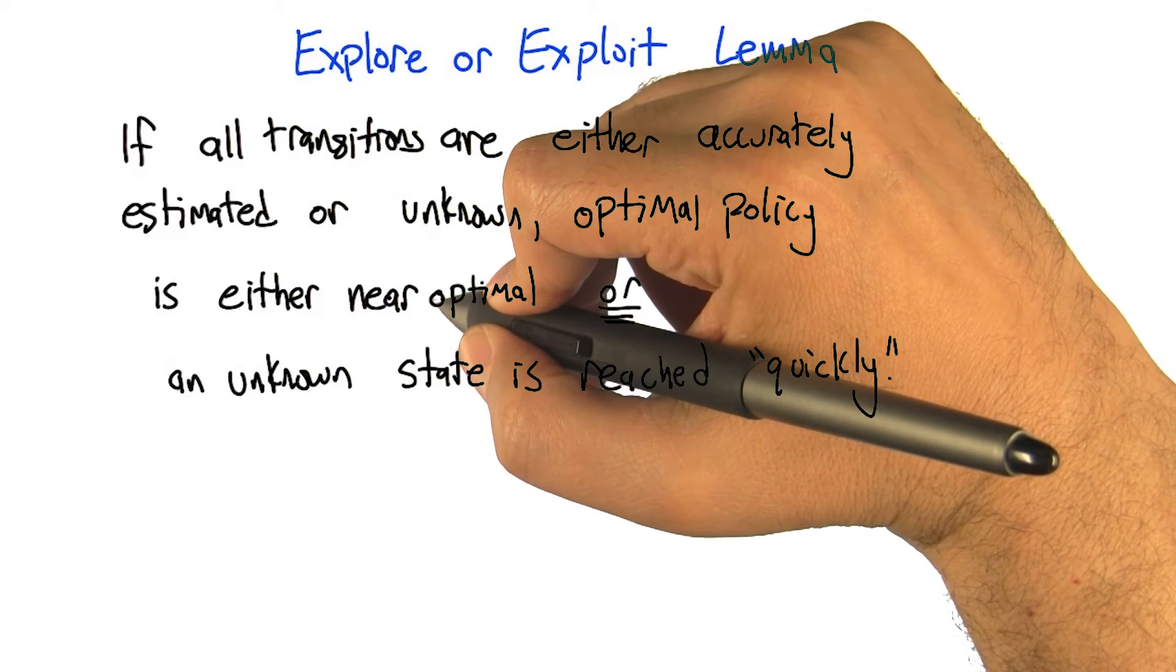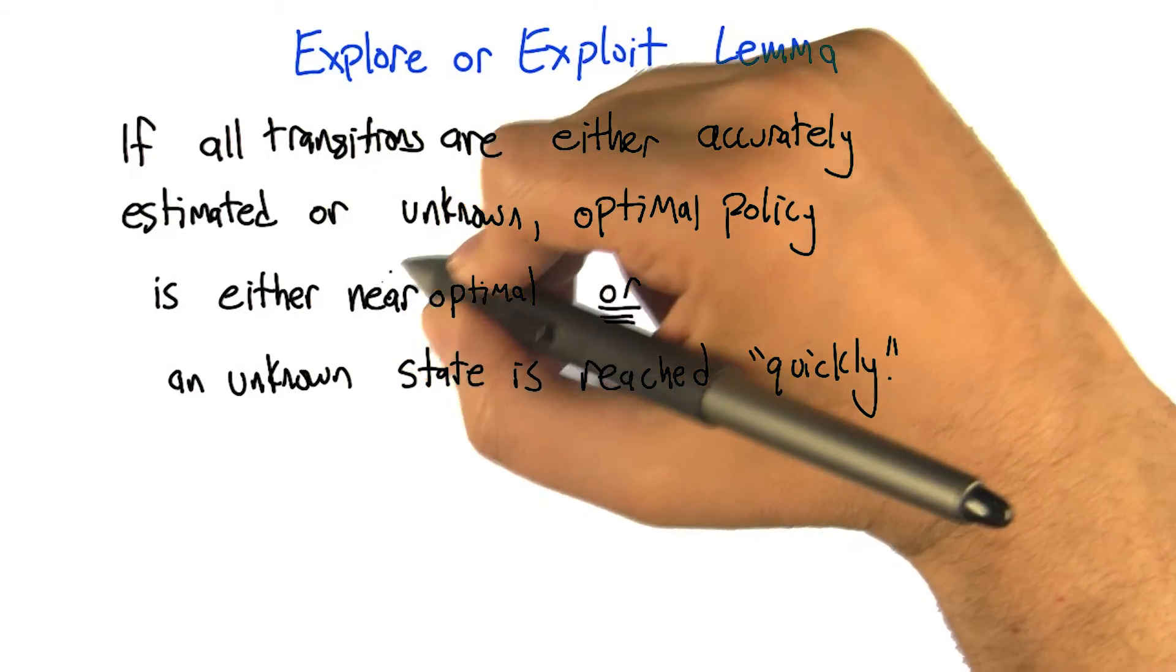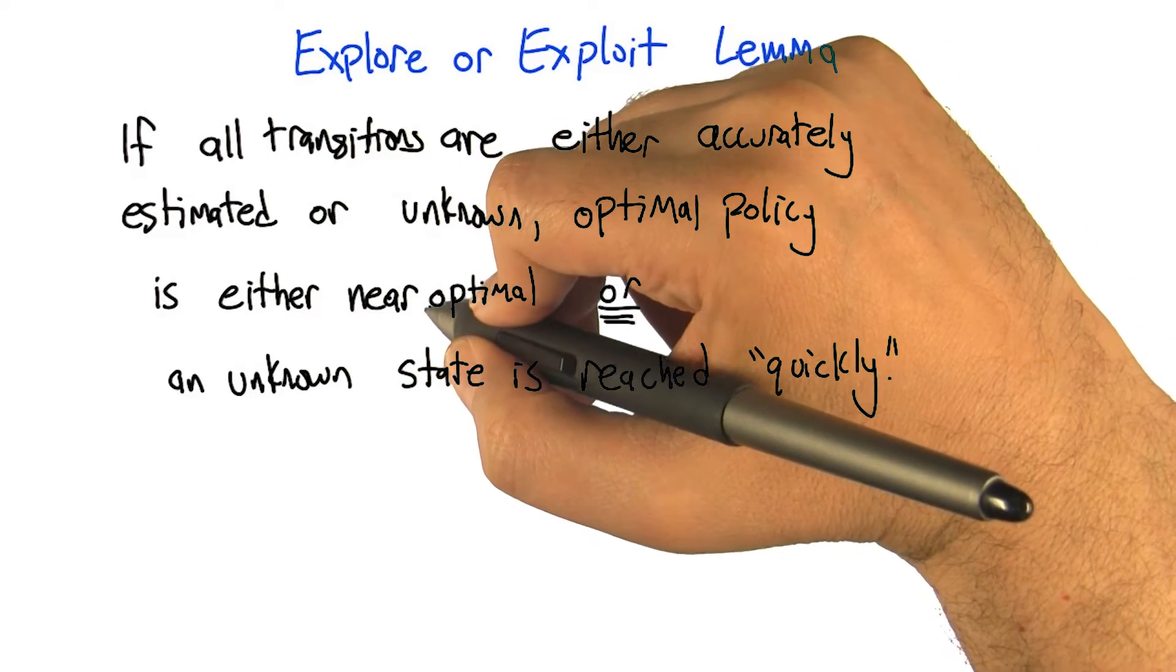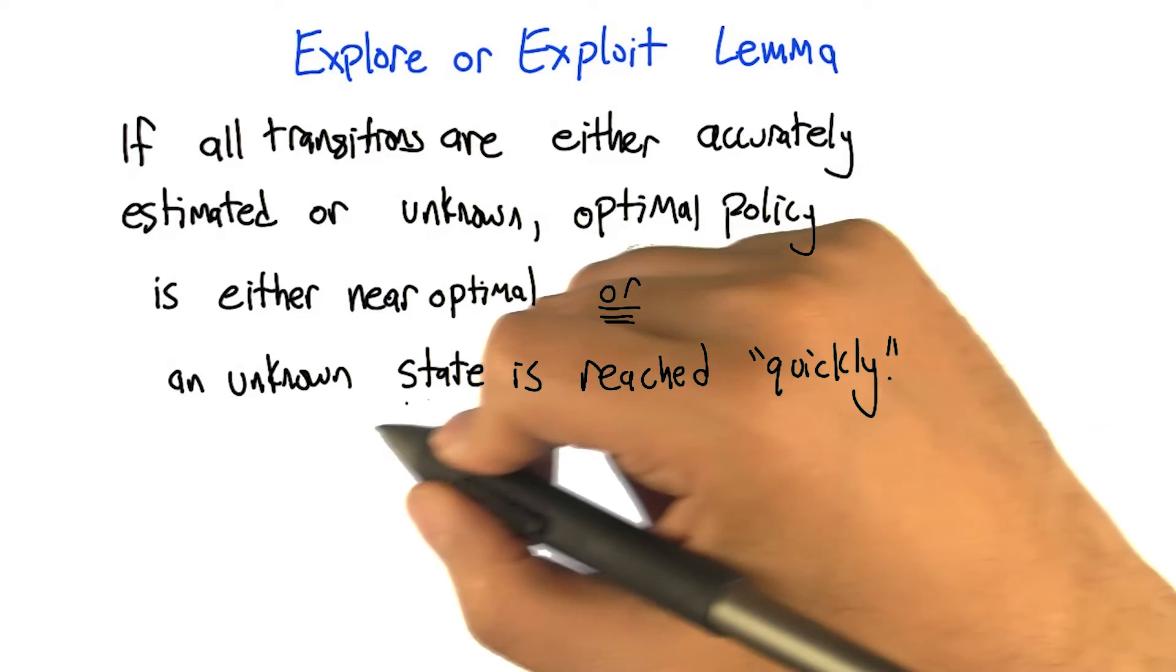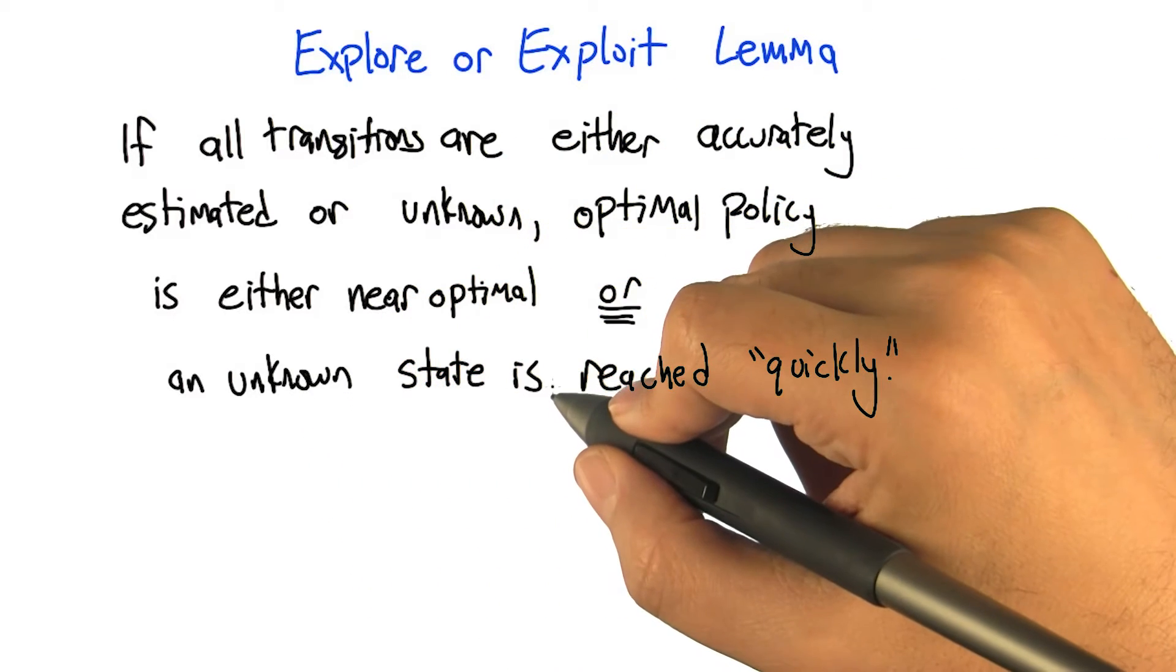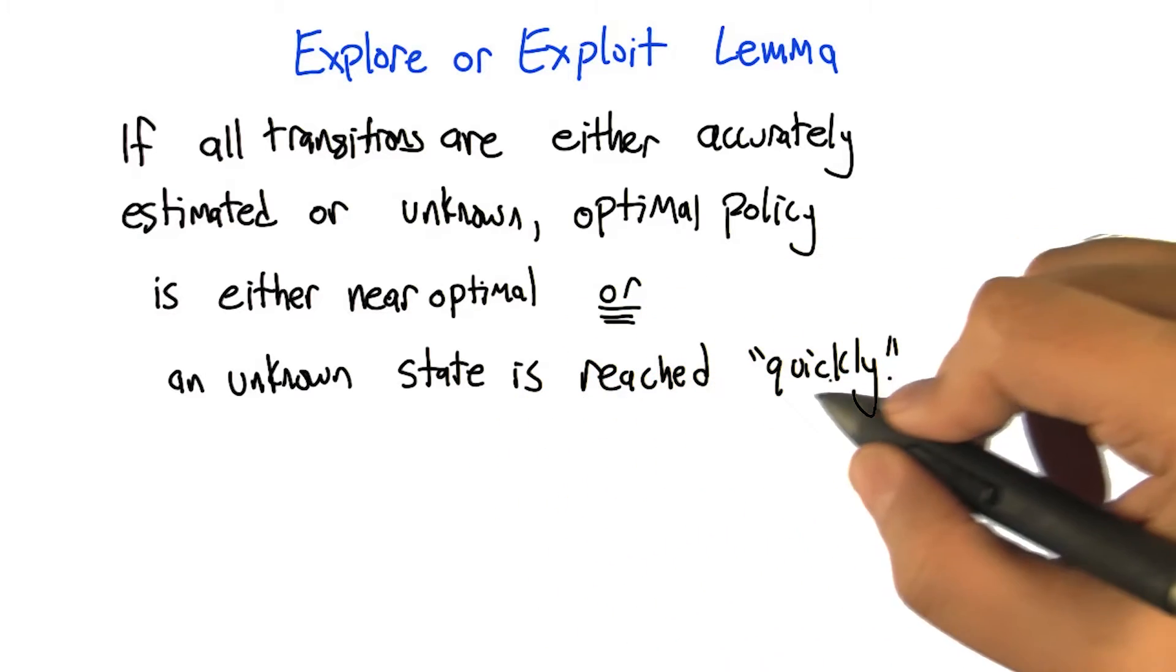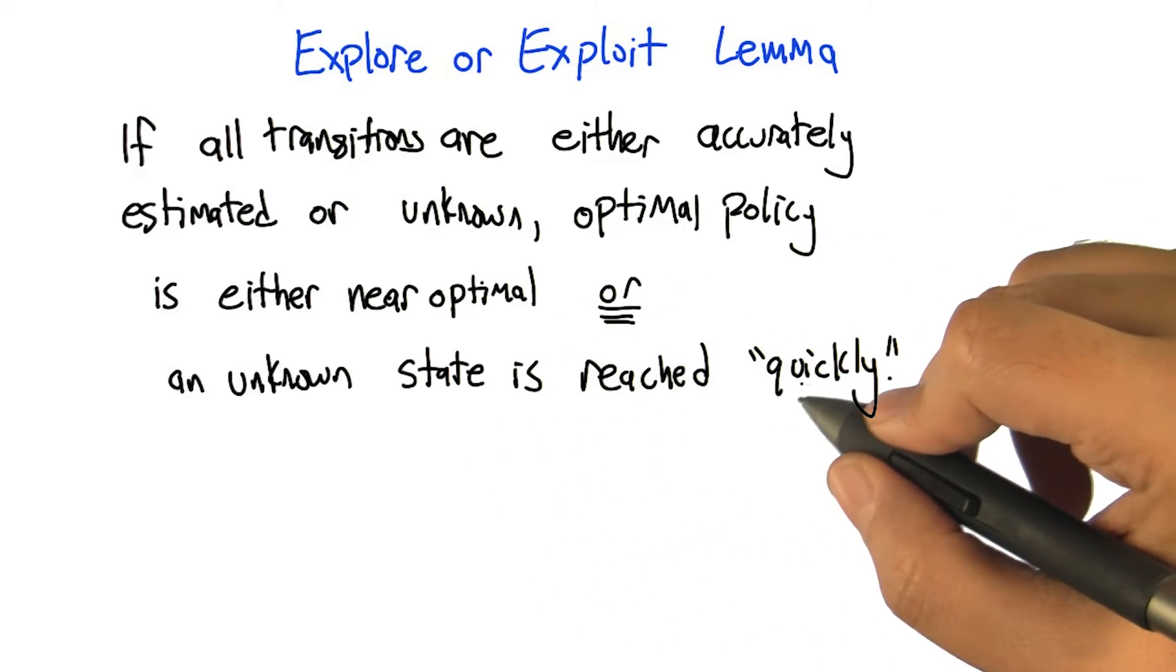In other words, we're not making any mistakes. The reward that we're getting as we travel along this optimal policy is essentially optimal, or we're actually going to make it to some unknown state, some RMAX marked state, relatively quickly in polynomial number of steps. We're going to reach this new state and we're going to learn something from that.